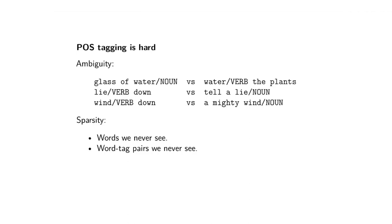There are two ways in which things are hard with language. The one is ambiguity — for instance, you can have 'a glass of water' where 'water' is a noun, but in other cases 'water' can be a verb, as in 'I've watered the plants.' So that ambiguity means if I just gave you the word 'water' in isolation, you won't know which part of speech it is. 'Lie' and 'wind' are other examples.